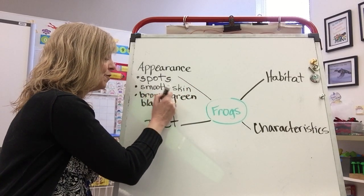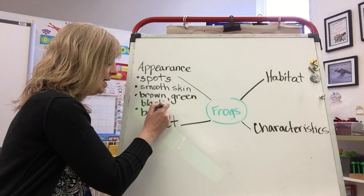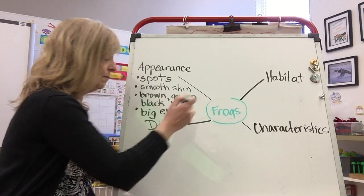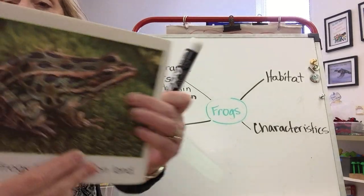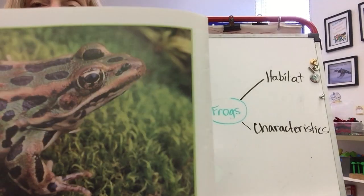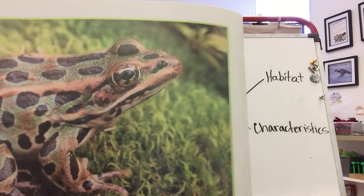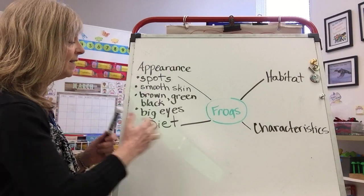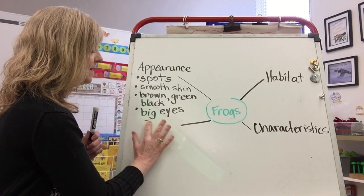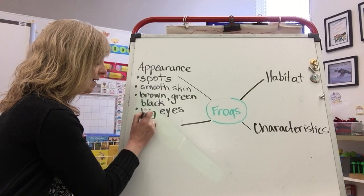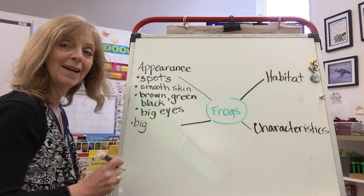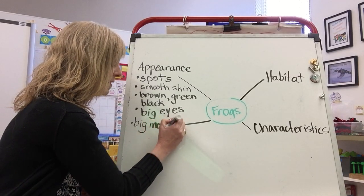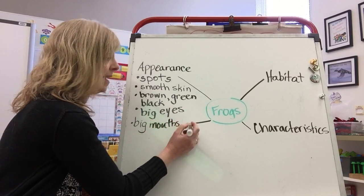One of the characteristics of all frogs is that they have big eyes. This frog even appears to have a little bit of kind of gold around its eye. They also have another feature that is big — big mouths. Their mouths are almost the same size as their body. That's big.